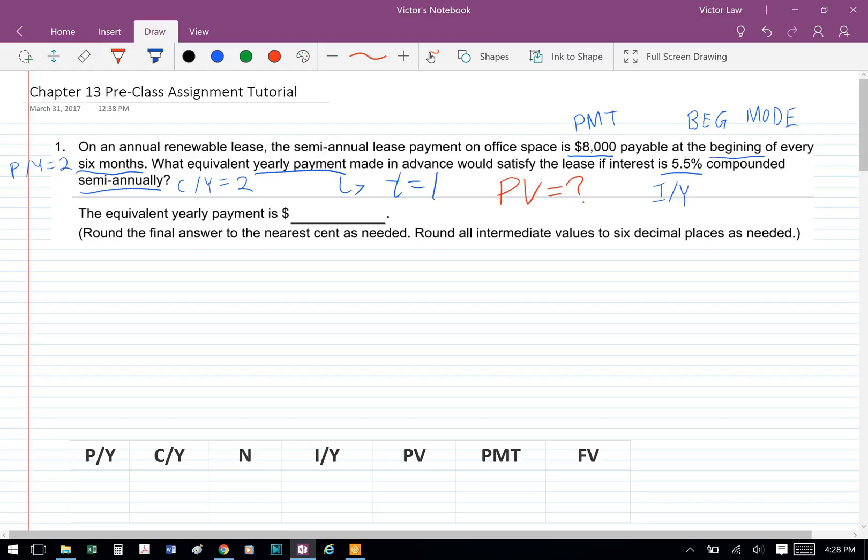So our T equals 1, and the interest rate is 5.5%. That's our nominal interest rate, I over Y, and compounded semi-annually. So C over Y equals 2.